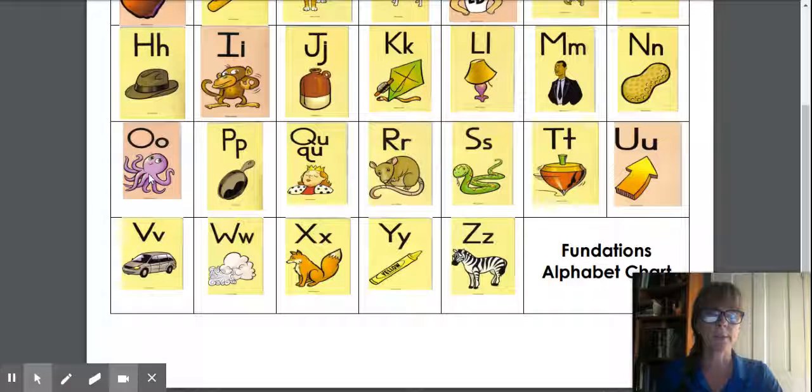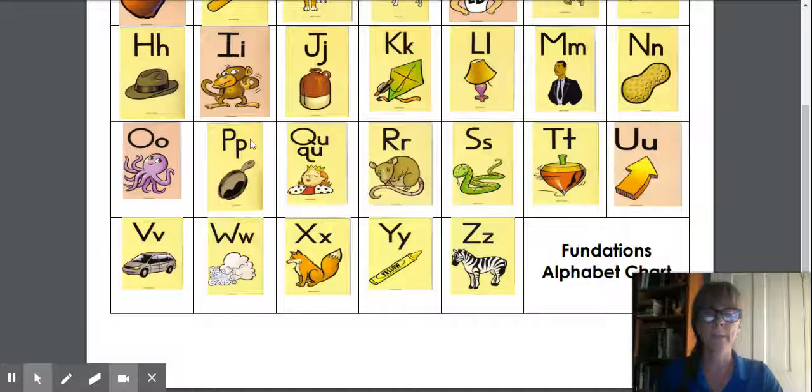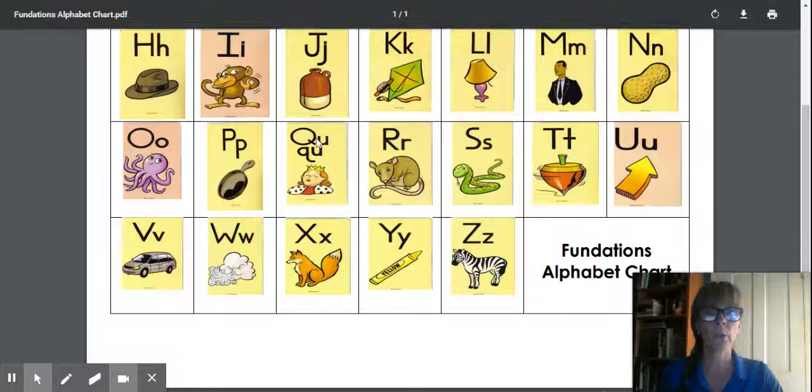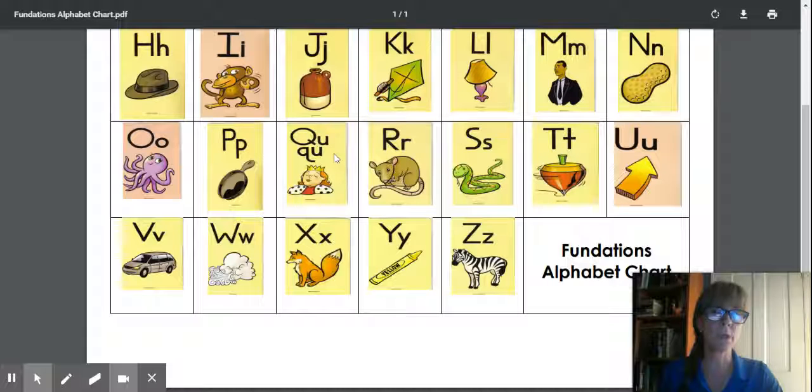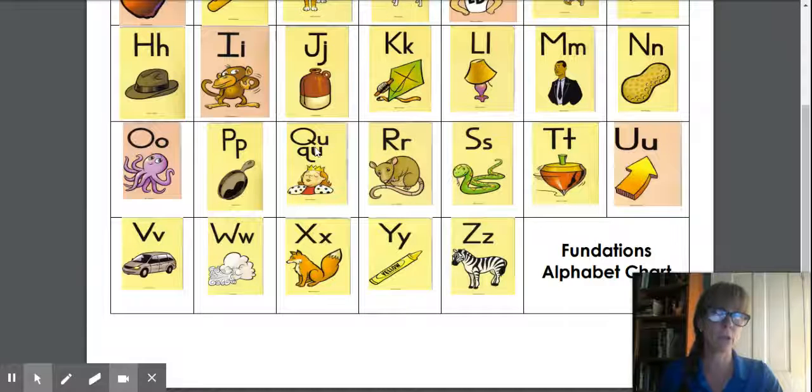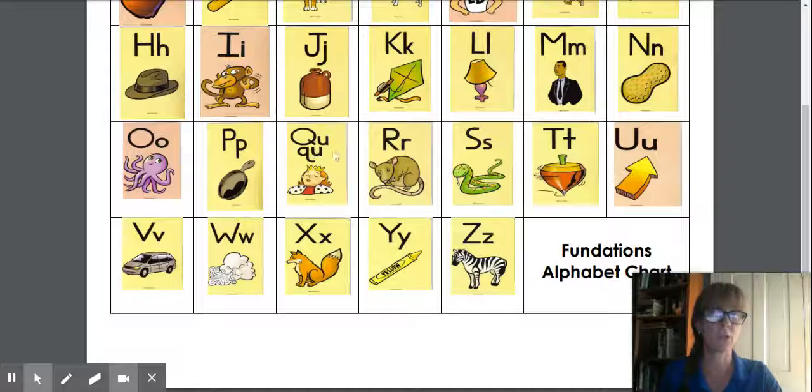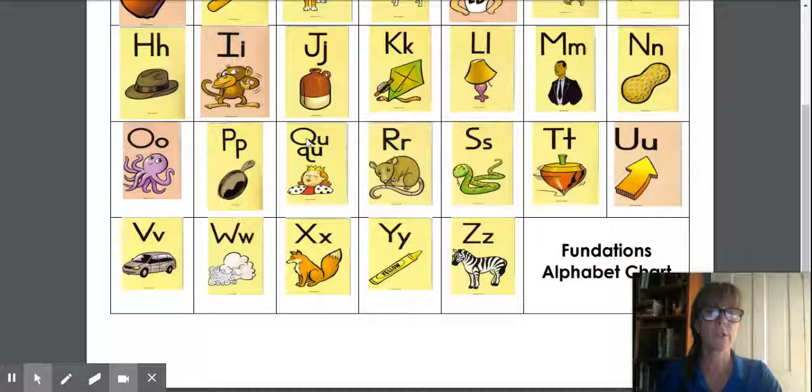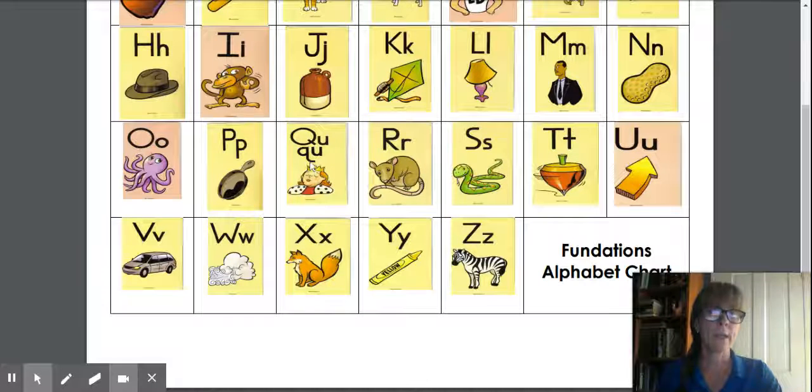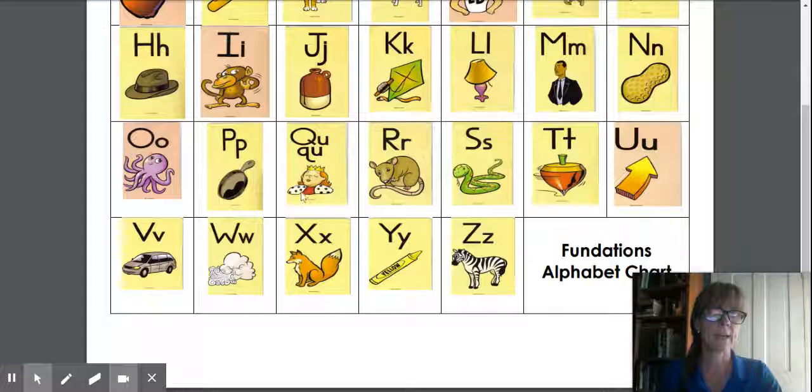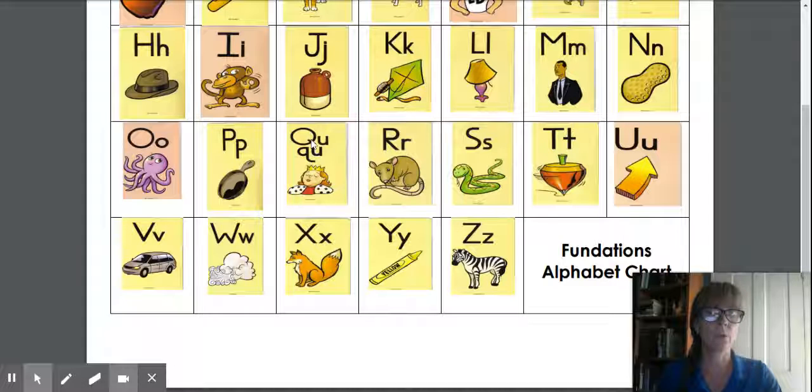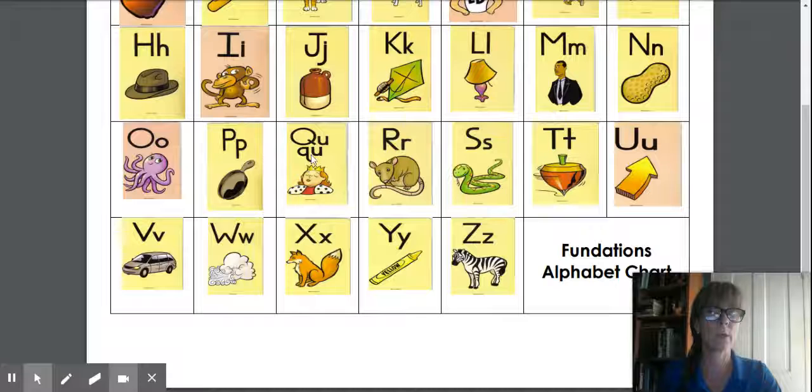We have O, Octopus, O. P, Pan, P. Q, which Q and the U are called buddy letters. So in the English language you never ever see a Q without a U. They're buddies, they're best friends. You always see them together, which is why this card is made this way. So it's Q, Queen, QU, because it has that U along with it. Q, Queen, QU.